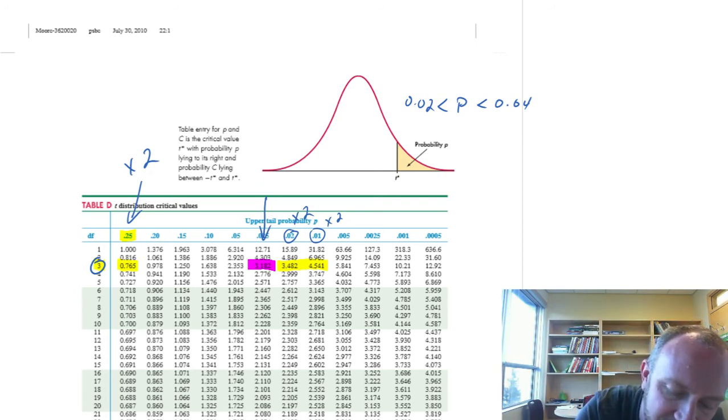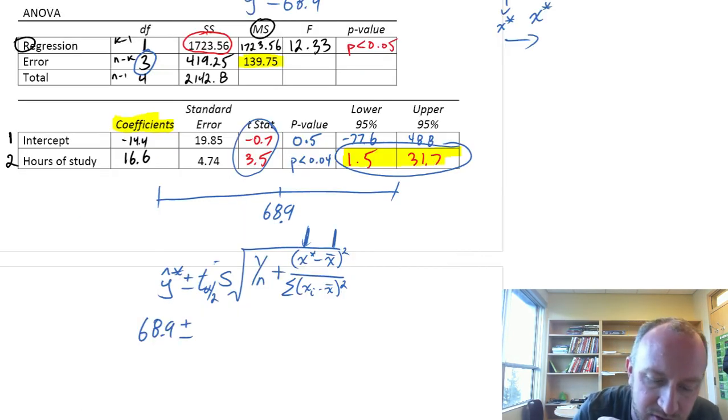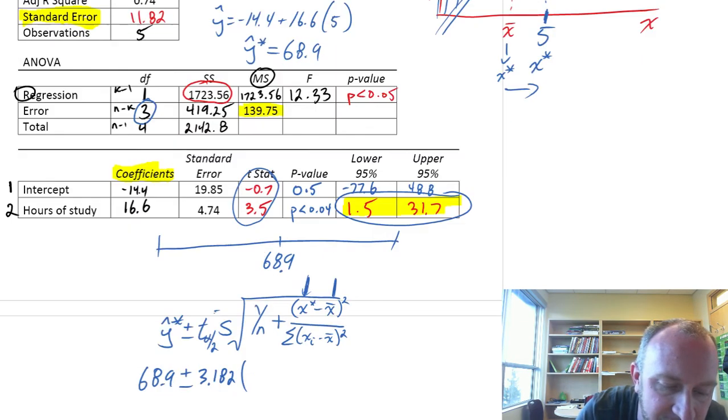And so, we'll use the same critical value that we used in our previous work, 3.182. So, 3.182. That standard error of the regression, that's this one here.